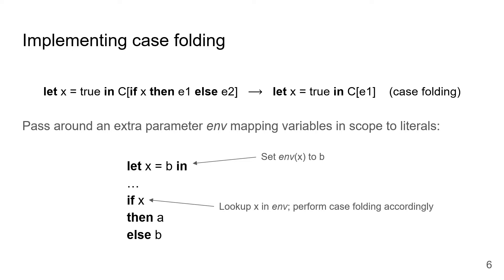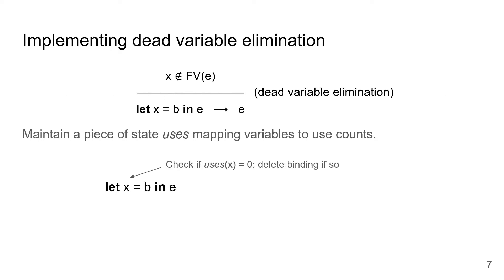Each of these transformations requires its own custom helper data structure in order to be implemented efficiently. In the case of case folding, we can pass around an extra parameter called env, that maps variable names in scope to the Boolean literals that they're bound to. When we encounter a let binding for a variable to a Boolean literal, we can extend env accordingly before making a recursive call. Then, when we encounter an if-then-else that scrutinizes a variable x, we can look up x in the environment to check if it's bound to a Boolean literal, and if it is, we can perform case folding. To implement dead variable elimination, we can maintain a piece of state which maps variable names to the number of times that variable is used in the expression being transformed. Then, when we hit a let binding, binding variable x, we can check if that variable is dead by checking if it has zero uses.